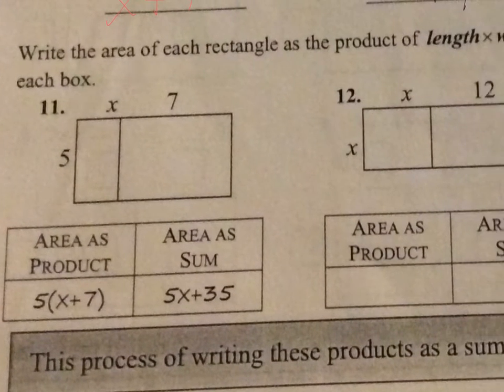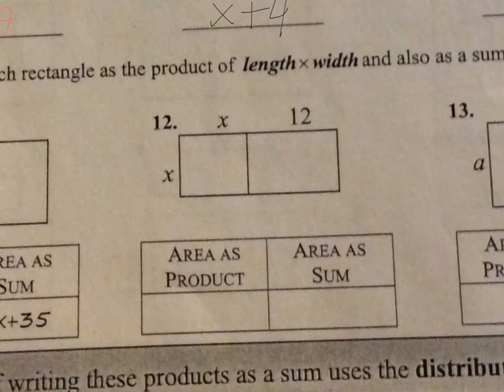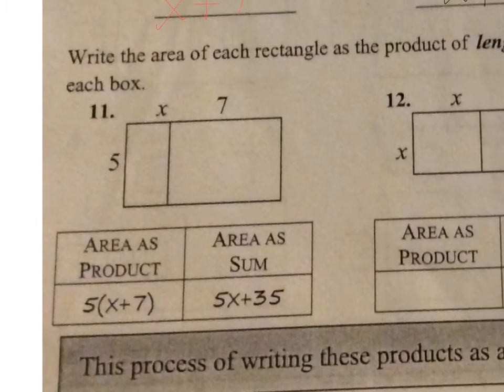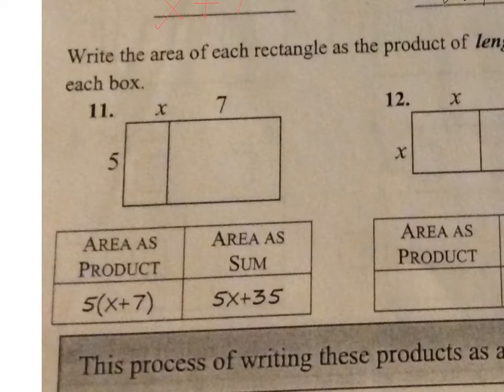This next section, we want to figure out the area of each rectangle as the product of length times width and also as a sum of the areas of each box. So this one's already done for us. Area as the product would be 5 times x plus 7. Area as the sum is 5x plus 35, because that did 5 times x. 5 times 7 is 35. That's where that number came from. 5 times x is 5x. And then x plus 7 is right here times 5.